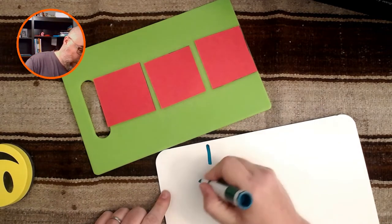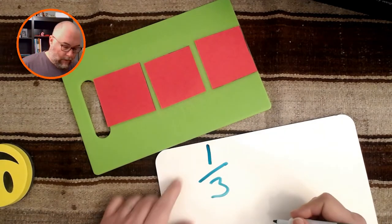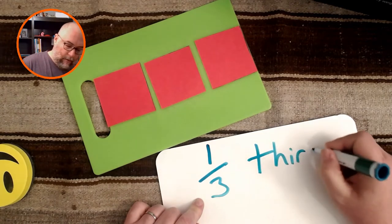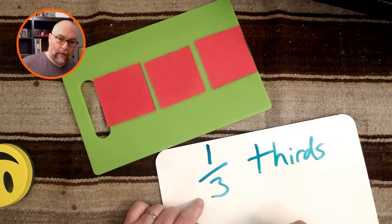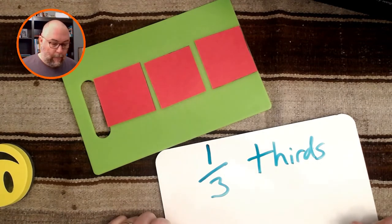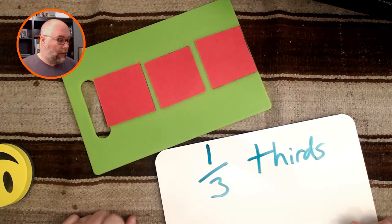So I got one, two, three equal pieces. And that's called thirds. And we write that like this. One on top of three is thirds. So that's called thirds.